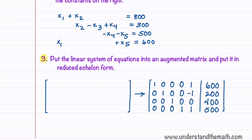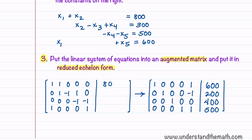We'll now put the linear system into an augmented matrix and put it in reduced echelon form. The augmented matrix is set up from our four equations, and after going through the row reduction algorithm, I've written the reduced echelon form result.